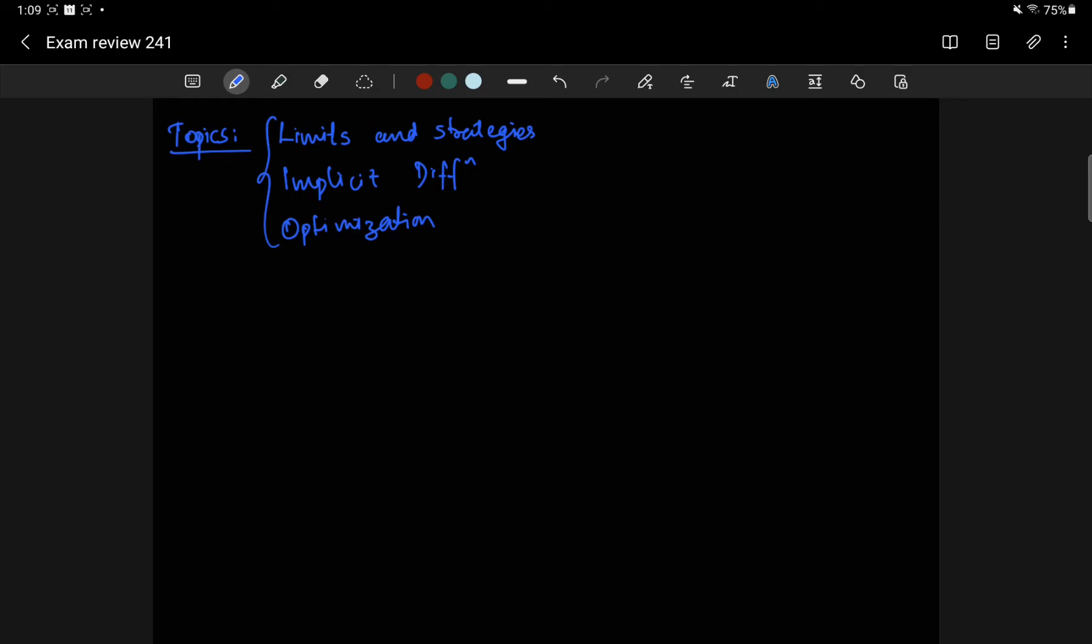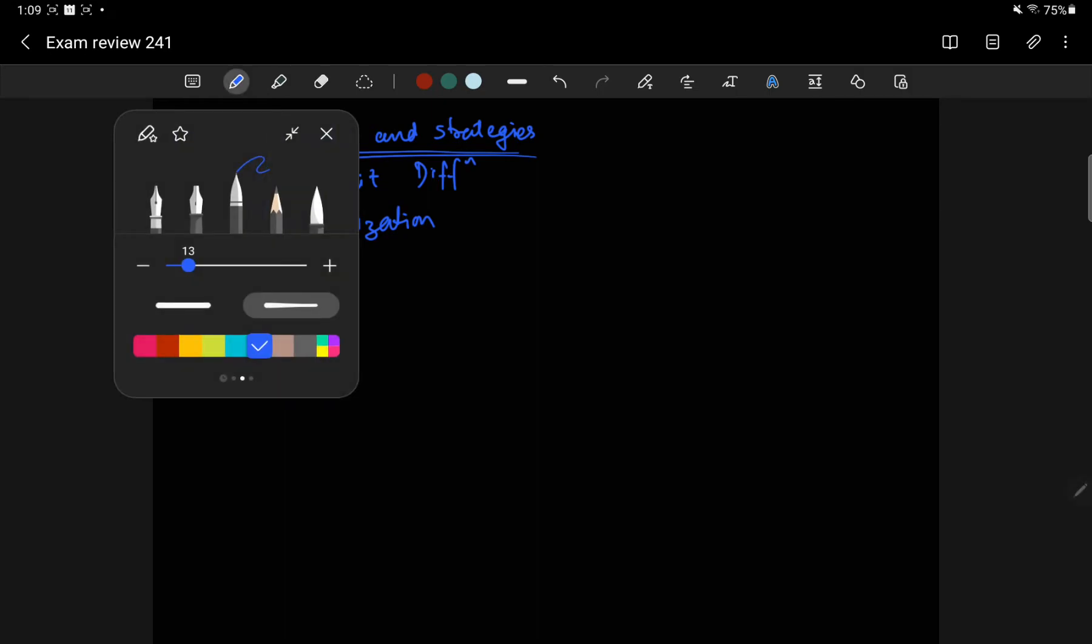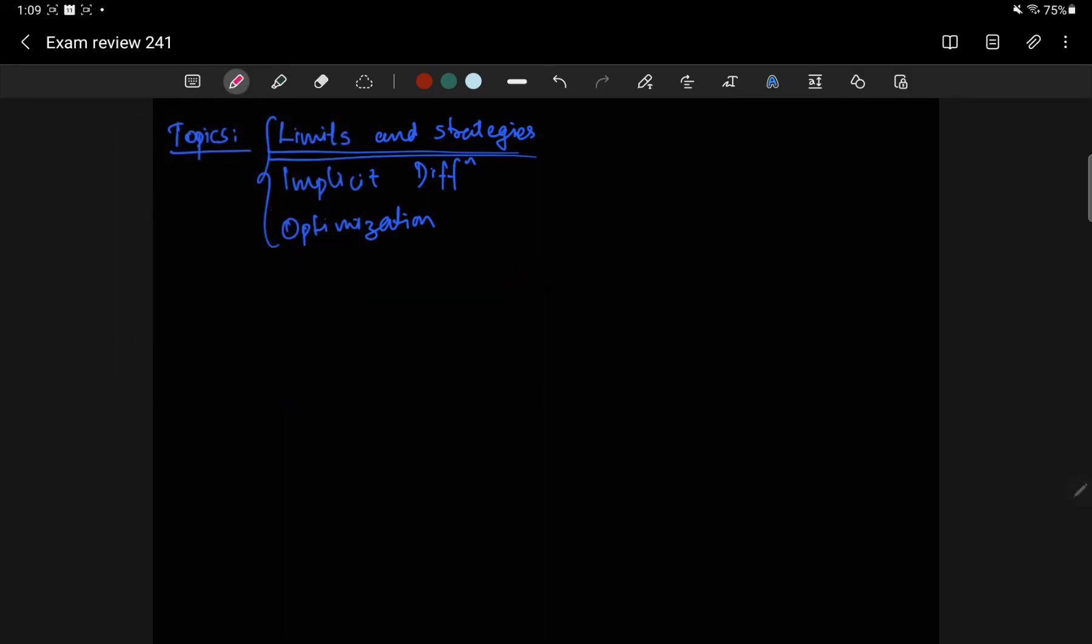So let's start with limits. Where is this useful? I'm not going to go into the technical details of what limits mean. I think all of you understand you're trying to guess what happens at that particular input, which for some reason we cannot directly plug in. So we look at the left and the right and so on. In application terms, where we use limits is in finding derivatives using definition.